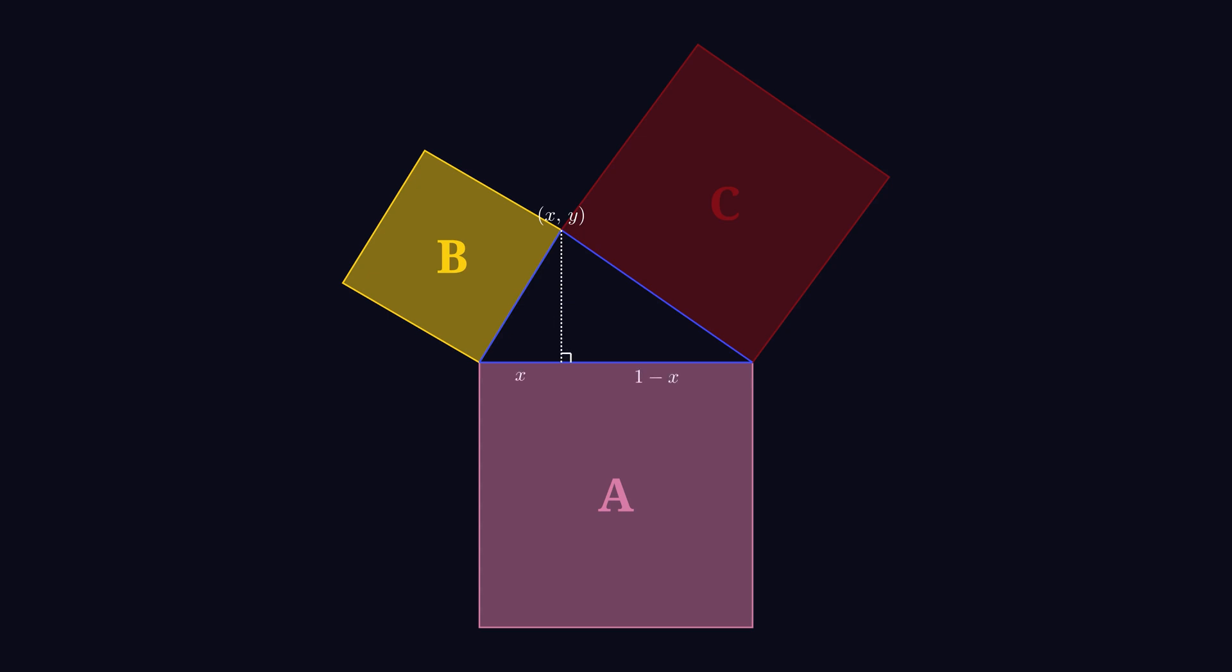Using a squared plus b squared equals c squared, this gives us side length b equals the square root of x squared plus y squared, and the side length c equals the square root of 1 minus x squared plus y squared. That's the scale.